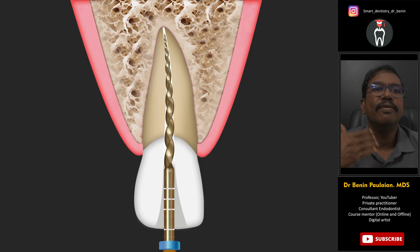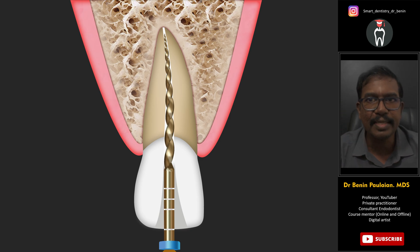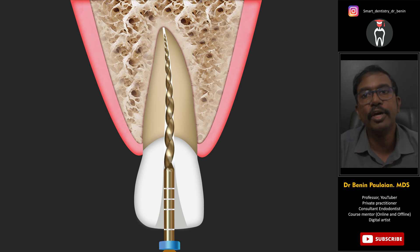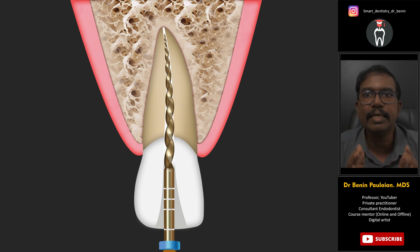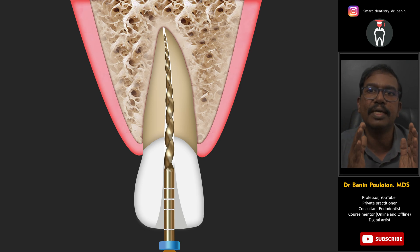What other problem can happen? The part of the file beyond the 16 millimeters of the cutting portion is a smooth, non-cutting part. This part of the file may enter inside the root canal and it may get bounded. Also, if you are using, for example, a 26% taper file for preparing the entire canal, the file will get bounded because from the tip through the entire 16 millimeters of the cutting portion it is attempting to cut the root canal wall.